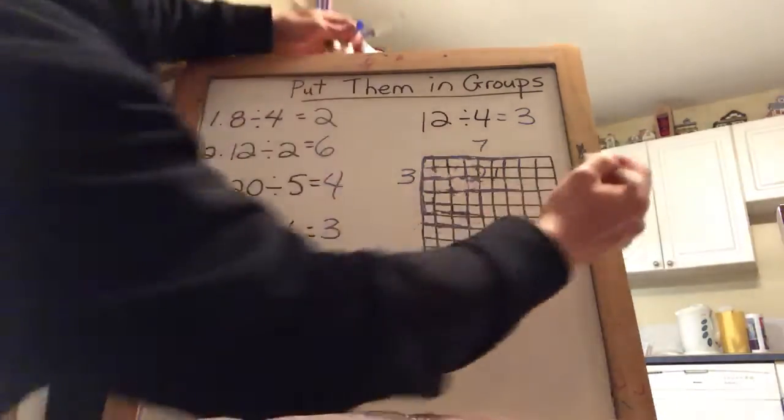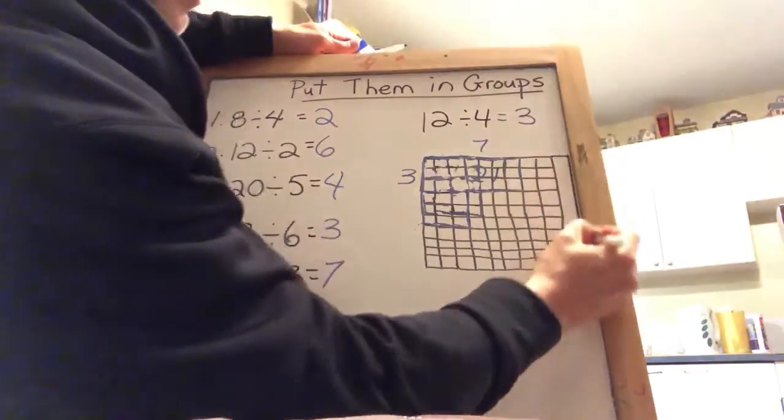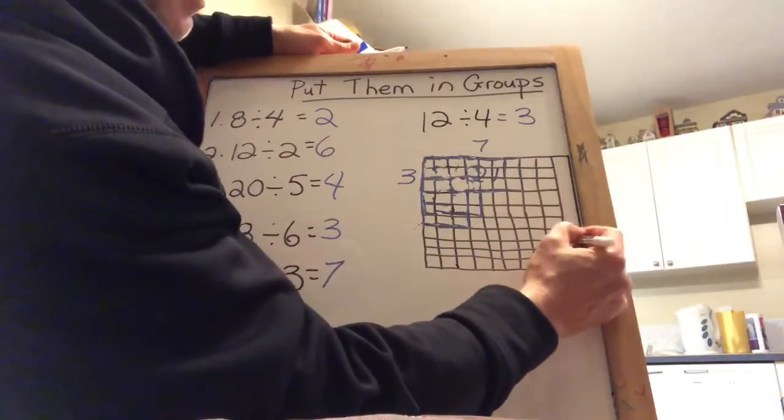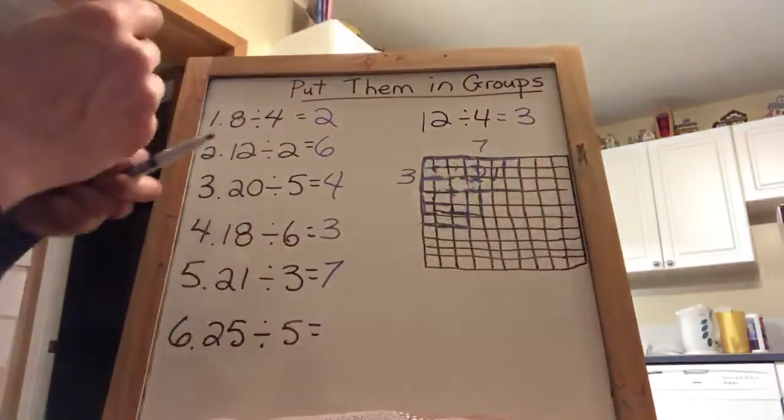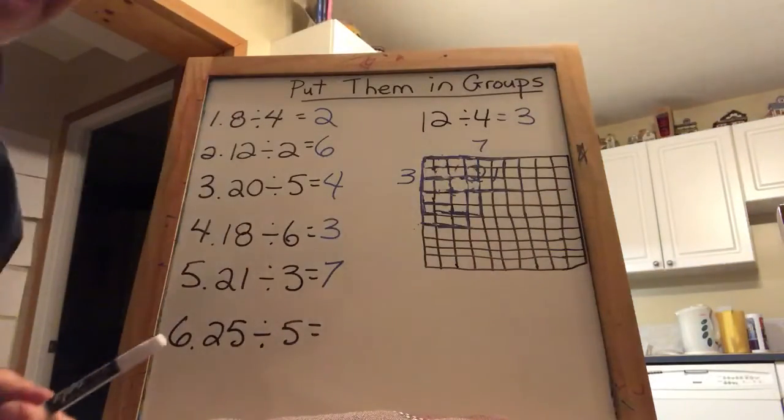Oh, I made a mistake on my base array here, guys. It should actually be 10 by 10 to have the same as you guys have. That's all right, though. We've got one question left.